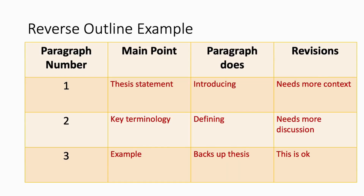Here's an example of a reverse outline. You would just number the paragraphs — one, two, three — write down the main point of what's happening there, what the paragraph is doing, and then give yourself another column with revisions. You might say for number one: this needs more context. Whereas number three: this is okay. You can check off paragraph three and don't need to work on the coherence there. Create a little word table for yourself with these headings and use it to go through your paper, reading for coherence to make sure the order makes sense and that paragraphs are actively substantiating your thesis.